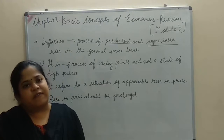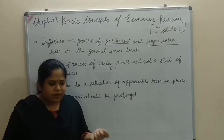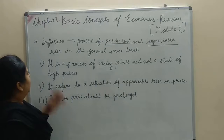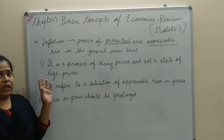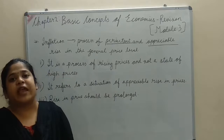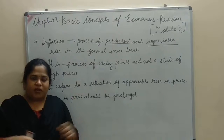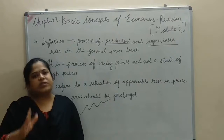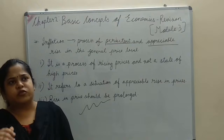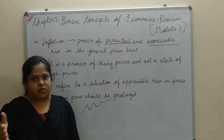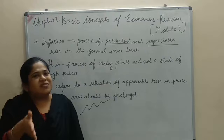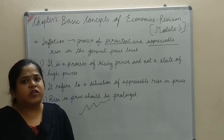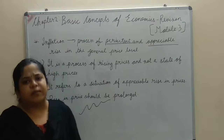At least an appreciable price level increase of 10 to 20% will be called inflation — the increase should not be just 1 or 2 rupees but something more. Inflation is a process of rising prices and not a state of high prices. Due to seasonal problems, some vegetables like tomatoes get expensive in rainy seasons because of shortage — that is not inflation, it is just a state of high prices.